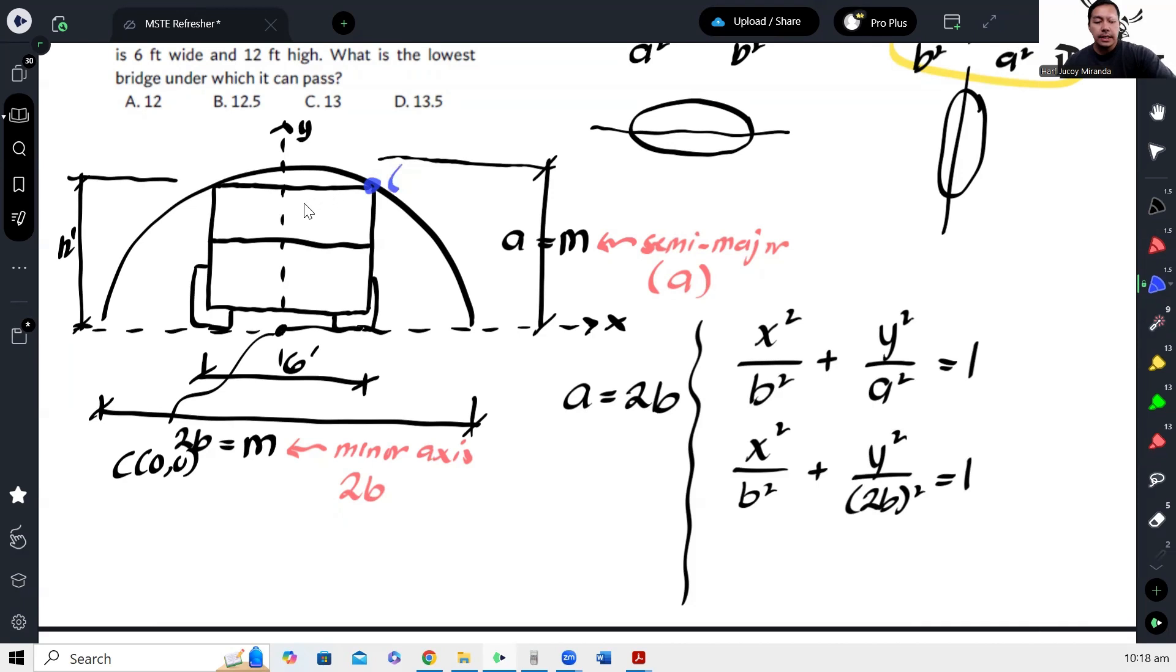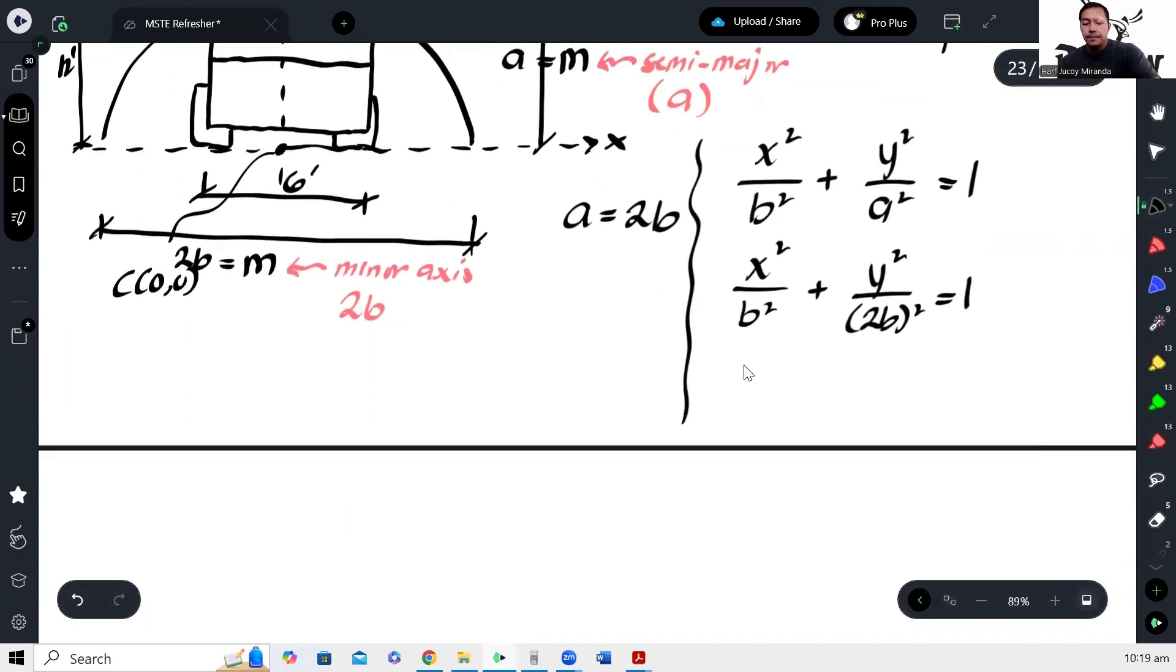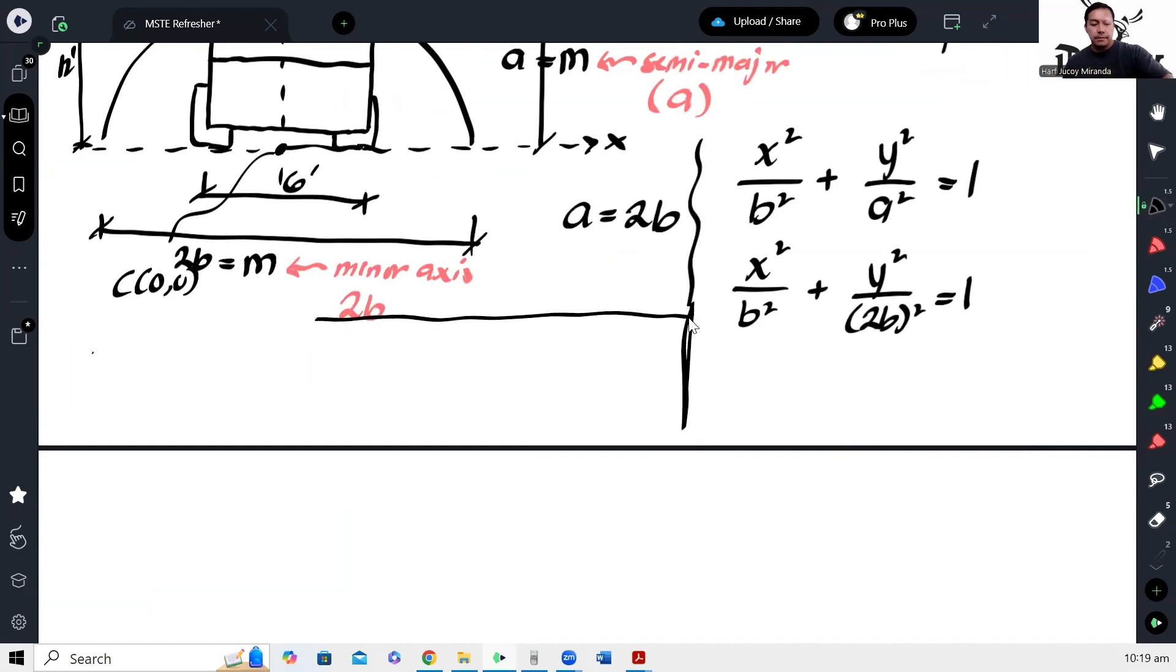Based on the measurements, the coordinates are half of 6, so 3, and the y is 12. Since it's on the ellipse, I can substitute this as x and y in the equation of the ellipse to solve for B. Therefore, at point (3, 12) we have 3 squared over B squared plus 12 squared over 2B squared equals 1. From here we should be able to solve for B.